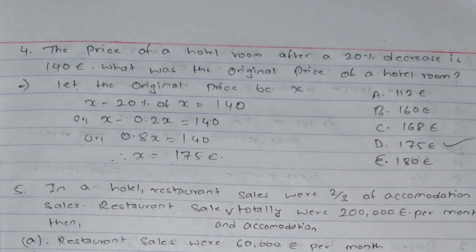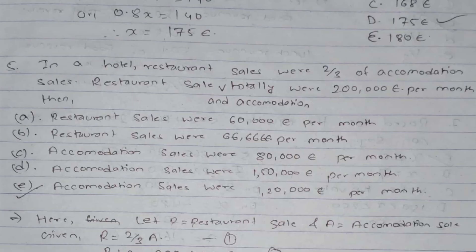Question 4 is similar to questions from our previous video. The price of a hotel room after a 20% decrease is €140. What was the original price? Let the original price be x. Then x − 0.2x = 140, so 0.8x = 140, therefore x = 175 euro. The original price was €175, giving option D as the correct answer.